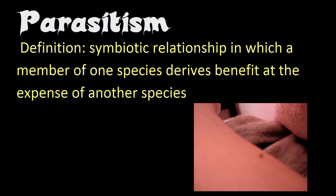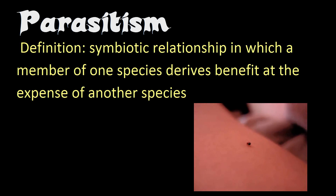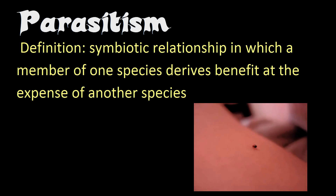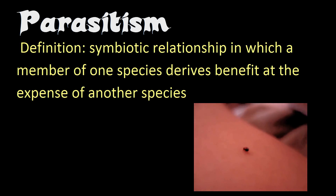Female fleas require a blood meal from the host in order to lay their eggs. The flea life cycle progresses through egg, larvae, pupa, and then adult stage. Fleas are truly parasitic in nature, and we know this because they will not emerge from their cocoons into adulthood until they sense vibrations, elevated carbon dioxide levels, and body heat, which would signify the presence of a host.